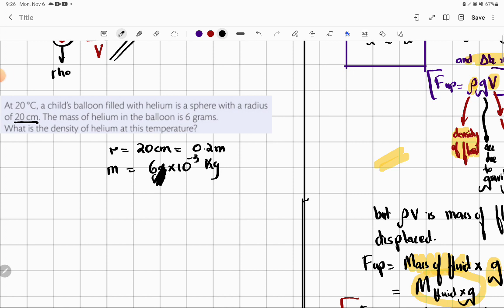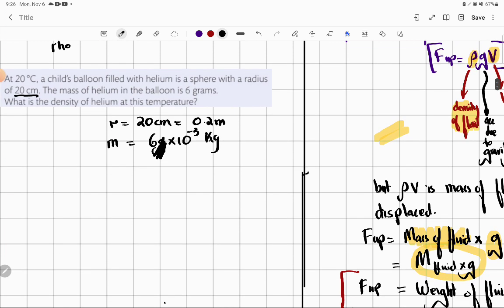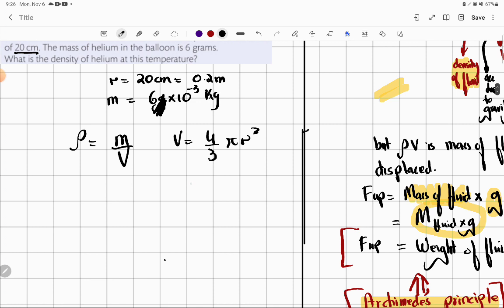But we have a radius here. What is the density? Density is equal to mass per unit volume. But the volume of a sphere is equal to 4 over 3 pi r cube. So 6 into 10 raised to power minus 3, and the volume of a sphere is equal to 4 over 3 pi radius 0.2 cube.